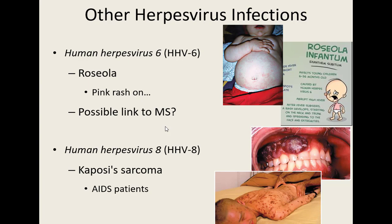HHV-7 also behaves like HHV-6, causing a pink rash on the trunk of the body. HHV-8 only causes issues in those with no working immune system — people in the AIDS stage of HIV. It causes a cancer of the blood vessels called Kaposi's sarcoma, where the cells lining blood vessels become cancerous and undergo uncontrolled, abnormal growth. It is deadly and is one thing that can kill those with HIV infection. Those with working immune systems will not suffer complications from HHV-8.